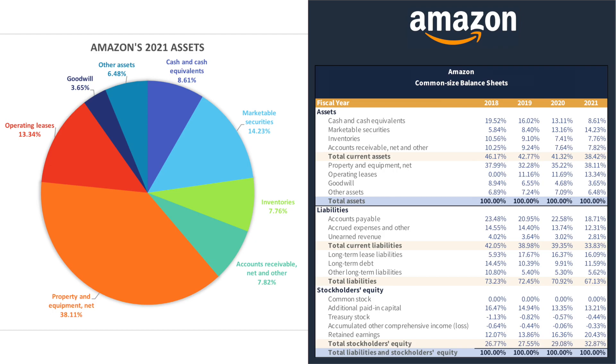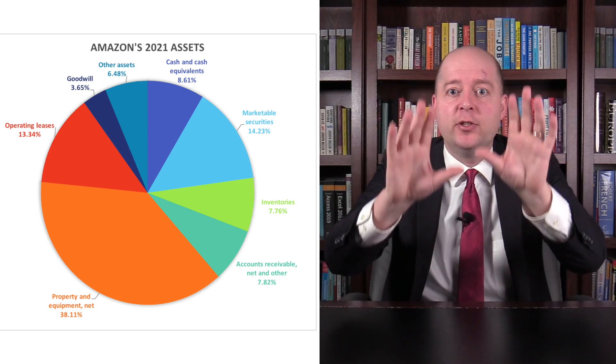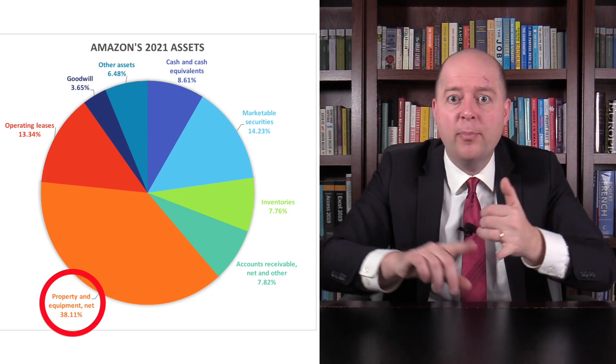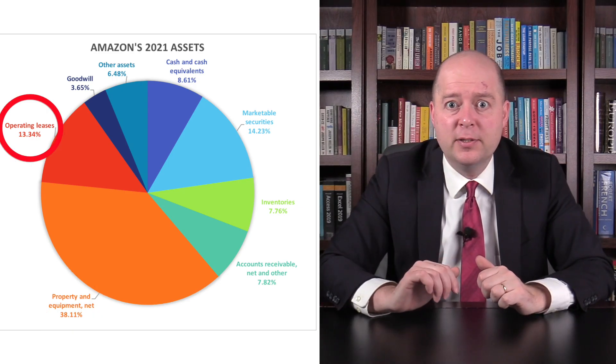So what are these assets? Given that Amazon is the largest online retailer in the world, you might expect that inventory would make up a very large percentage of Amazon's assets. However, inventory was just 7% of Amazon's total assets at the end of 2021. The majority of Amazon's assets were actually fixed assets — property, equipment, and operating leases. This makes sense because Amazon not only has lots of fulfillment centers for its retail operations, it also has property and equipment for its Amazon Web Services division.